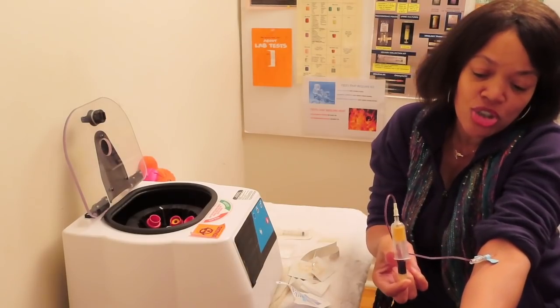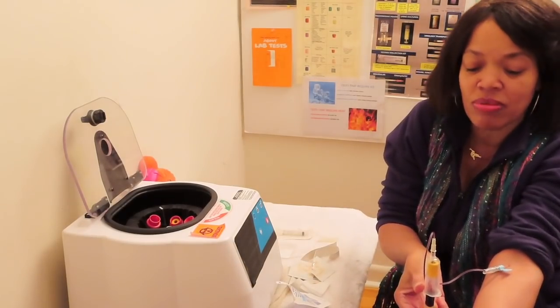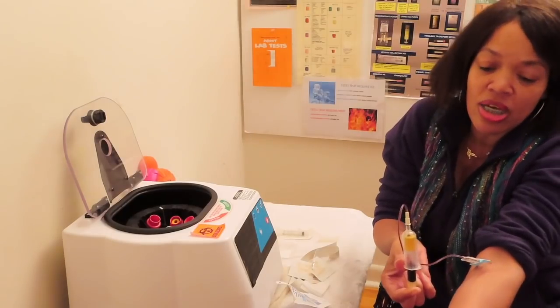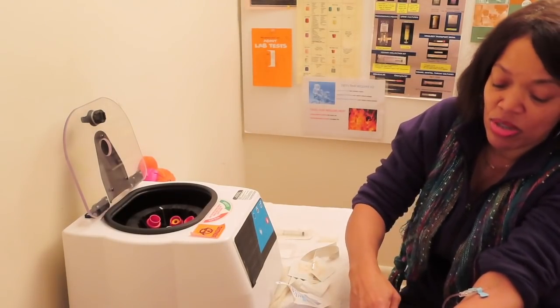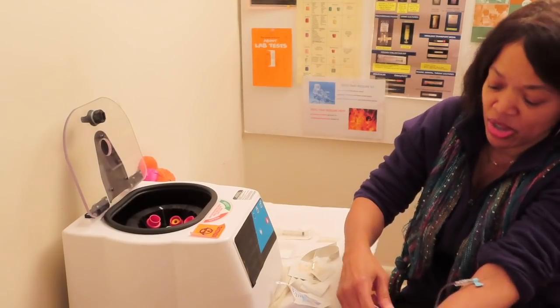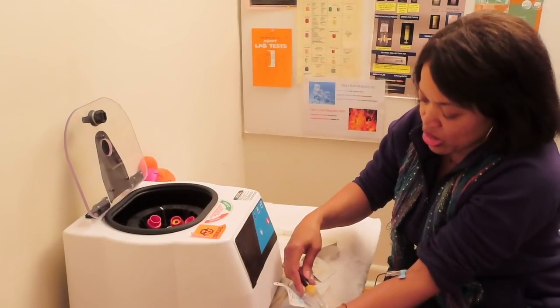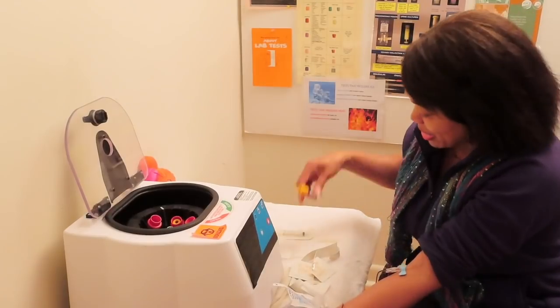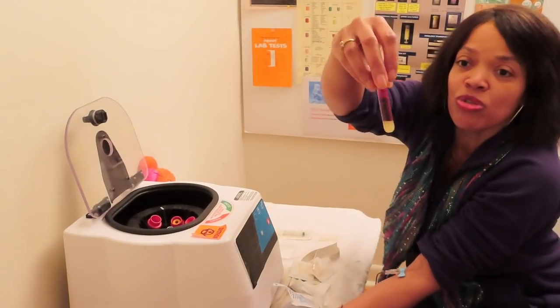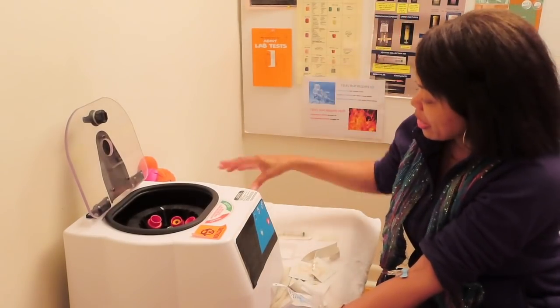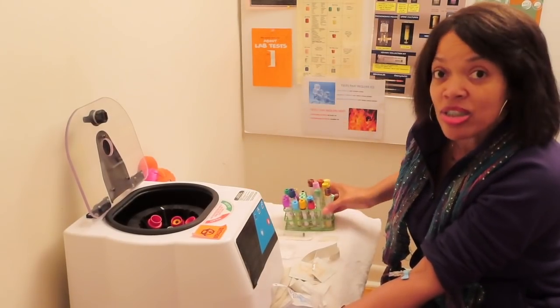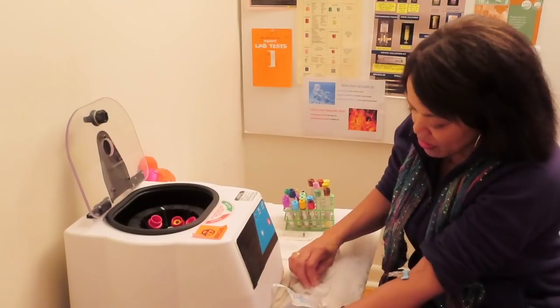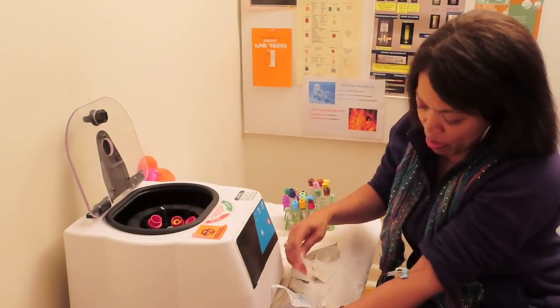So what you want to do because it's the evacuated tube system, you let the tube fill and let it stop on its own. Once it stops, you remove the tourniquet if you have a tourniquet on. Of course you do. So we're popping our tourniquet, which is my sleeve. We removed our tube. We have whole blood. We're going to sit it in our rack. If we have a rack, we always set it upright in our rack so that it can clot. And go ahead and finish your patient care.